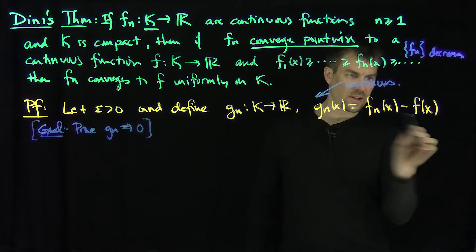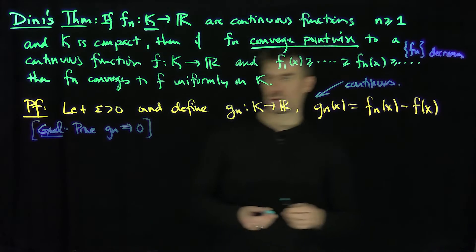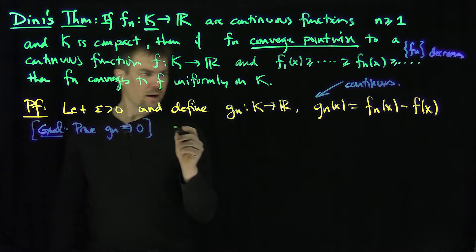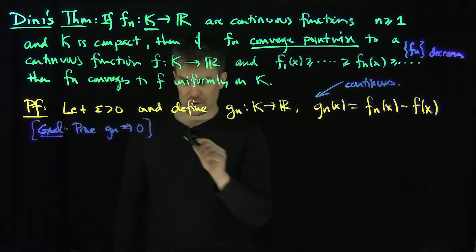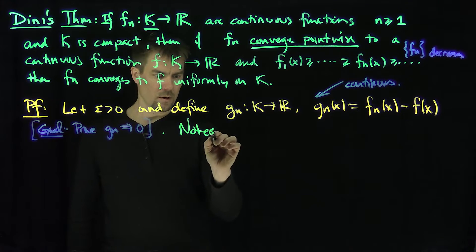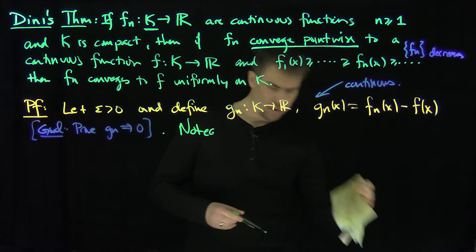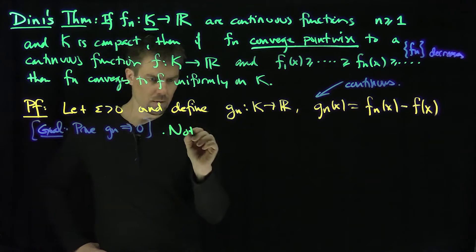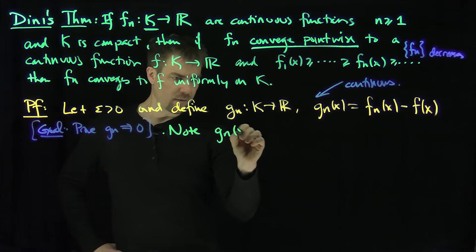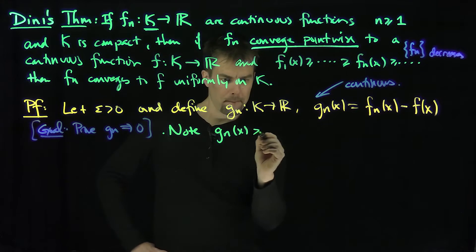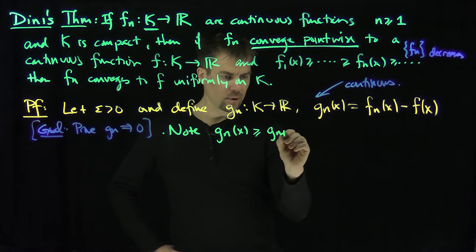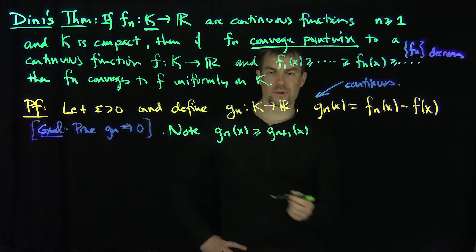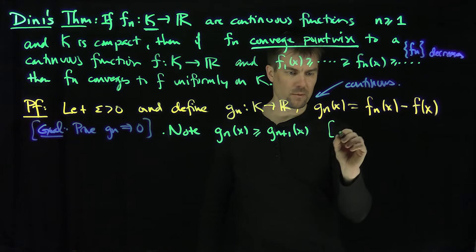If g_n converges uniformly to zero, then f_n of x minus f of x converges uniformly to zero, which means f_n converges uniformly to f. Note that g_n are decreasing functions as well: g_n of x is bigger than or equal to g_{n+1} of x, because f_n is bigger than or equal to f_{n+1}. So the g_n form a decreasing sequence.